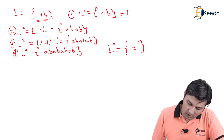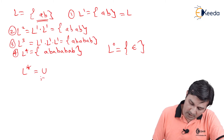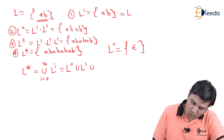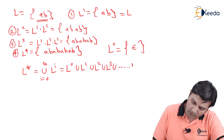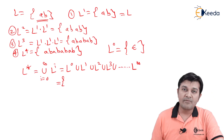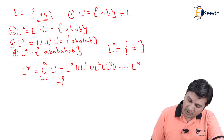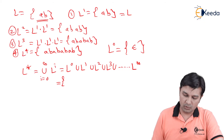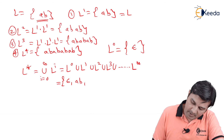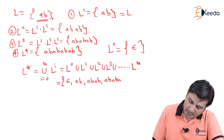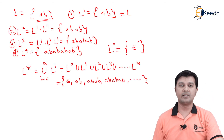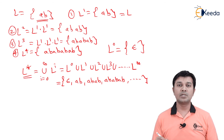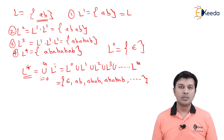Now what is L star? We know L star is the union of all L^i from i=0 to infinity. So it is L0 union L1 union L2 union L3 union L4 and so on up to infinity. Since union means joining with no combinations, L star = {epsilon, AB, ABAB, ABABAB, ABABABAB, ...} and so on to infinity. From this example we can conclude that L star represents zero or more repetitions of AB.